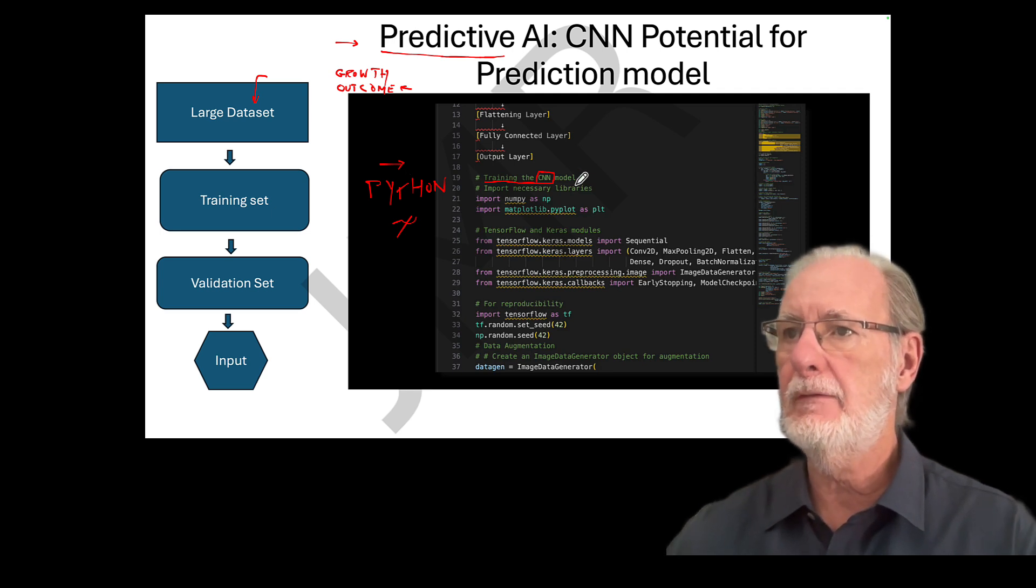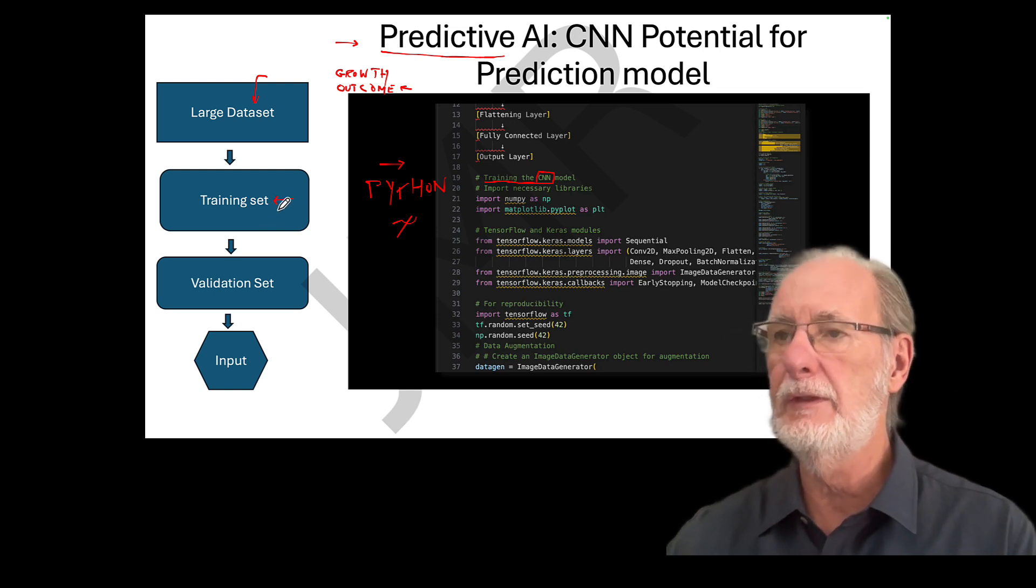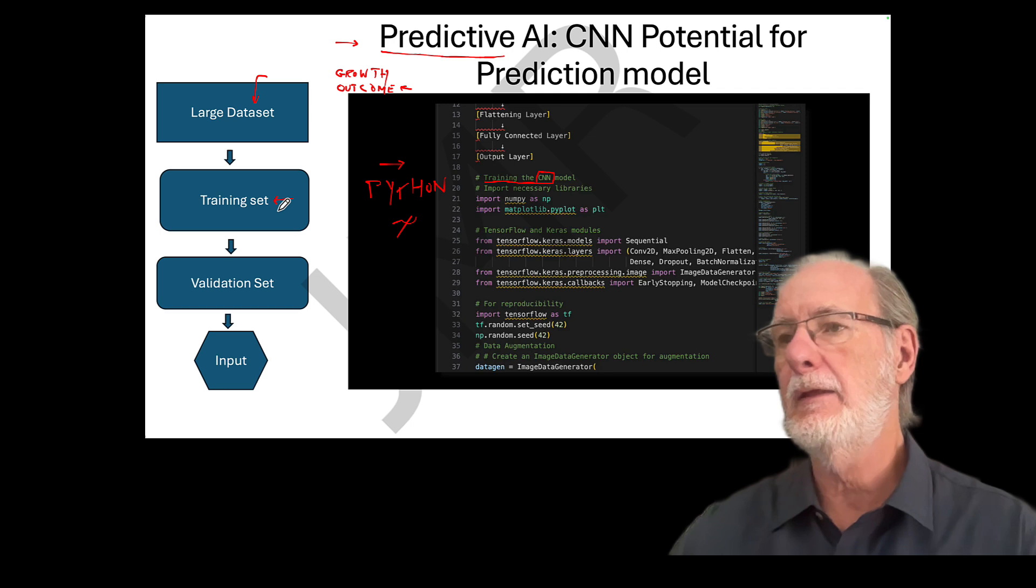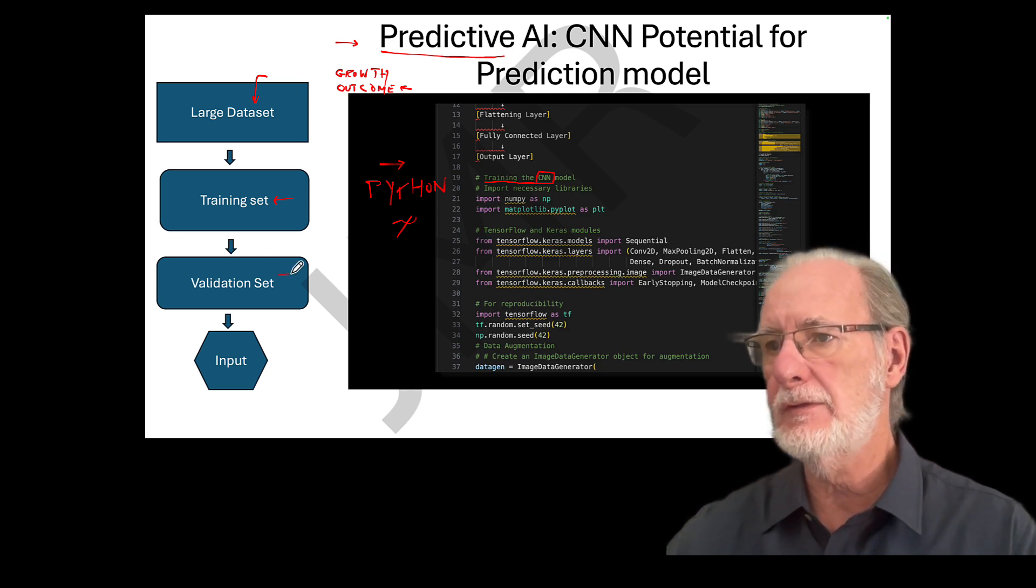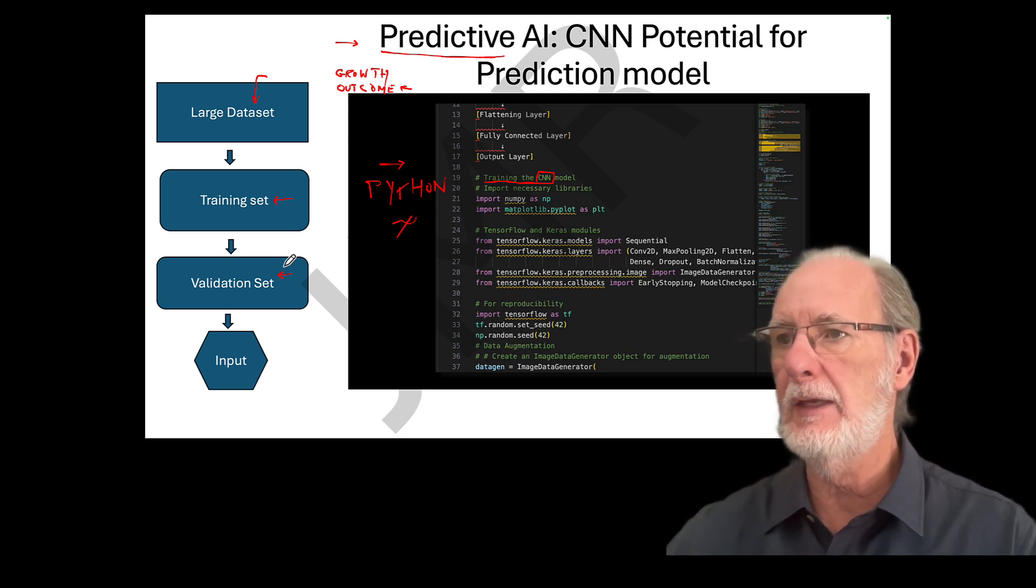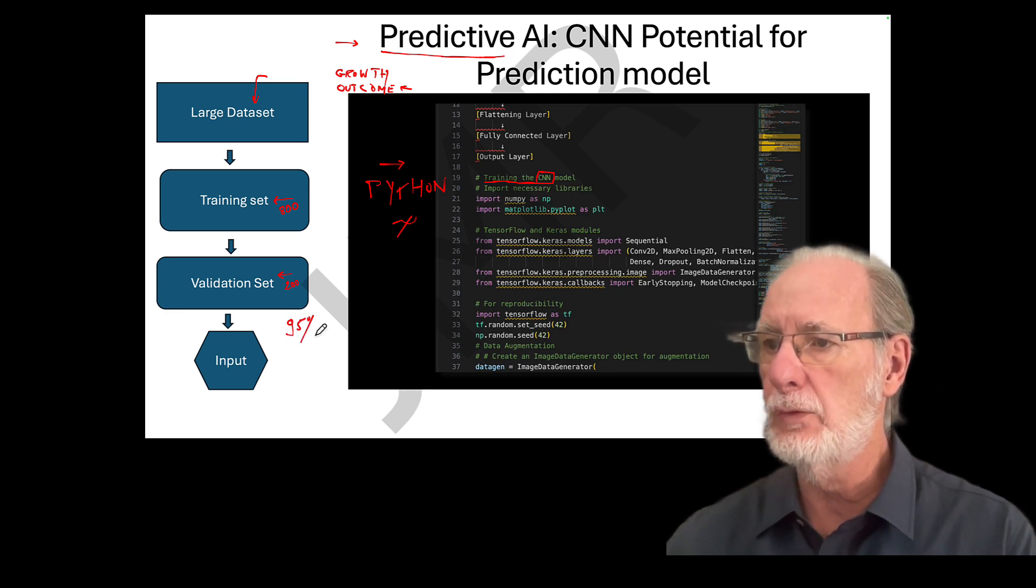Then from the large data set, we will have a training set, which is all the data that we are going to insert into the AI machine or machine learning algorithms. So we're going to train the data for predictions or for outcomes. Then we need a validation set. So usually it's an 80% training set. So if you have a thousand records, you're going to use 800 here and you're going to use 200 there.